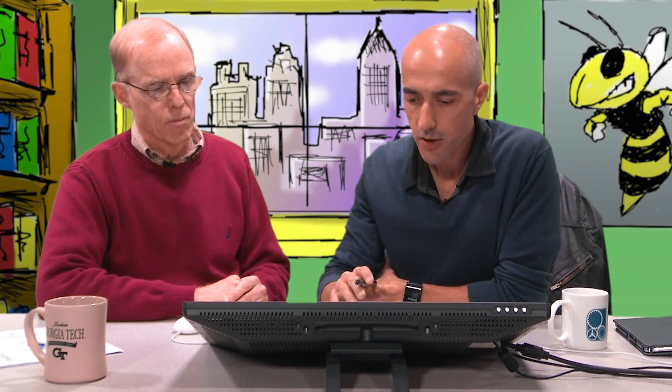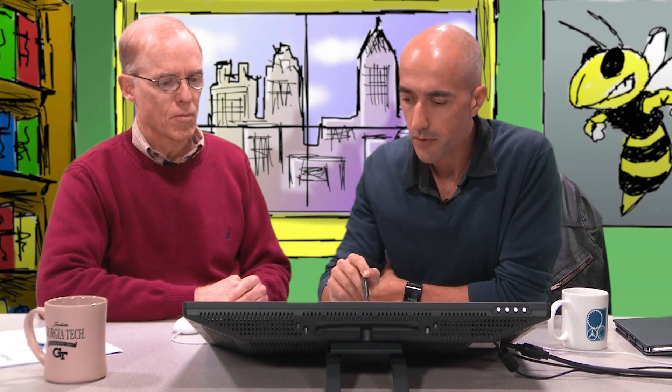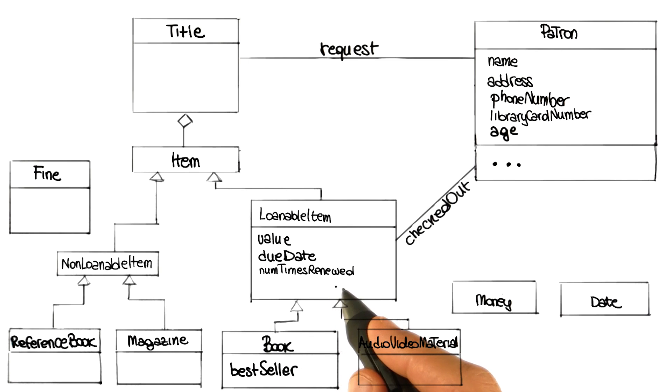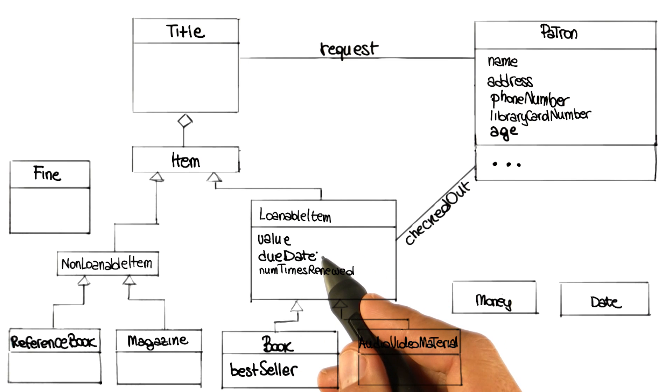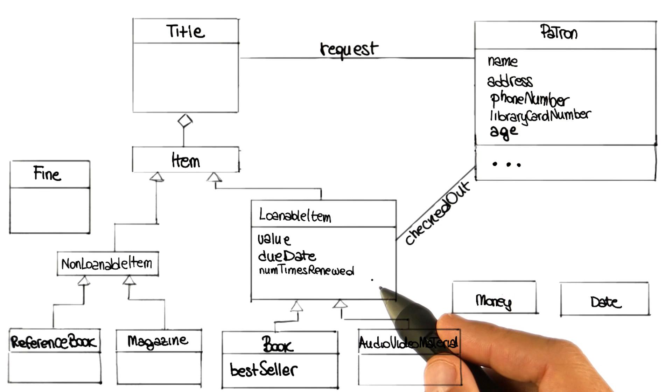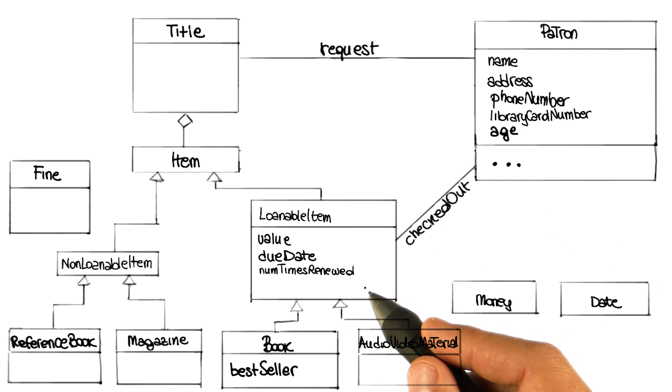Let me see if anything changed after we did this last modification. There is something that I would like to do here. Looking at this a little bit more, I noticed that there are two attributes — renewed and due date — that we have in loanable item. But they don't seem to be really attributes or characteristics of loanable item. They are more characteristics of the association between the loanable item and the patron.